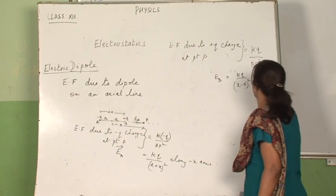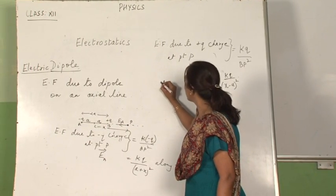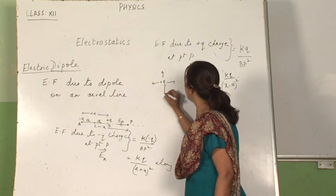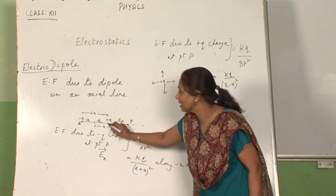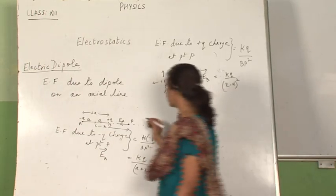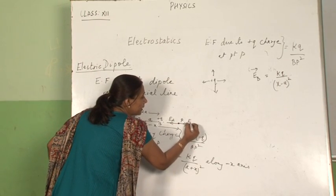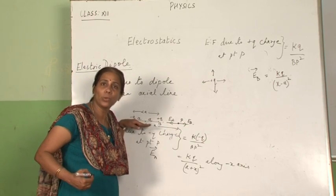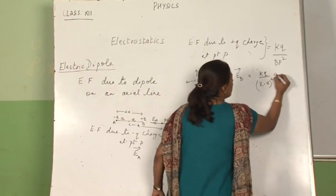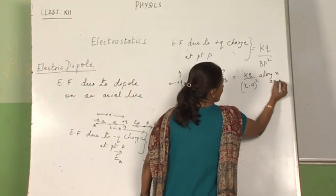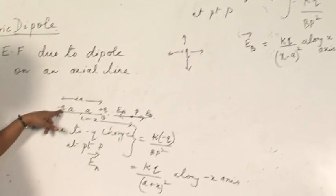Now what is the direction? Just check it out — this is E_B. I have told you that whenever you have a plus q charge, the direction will be away from the point. So at this particular point, the direction of the electric field will be in this way. I should show it from point P, so E_B is in the direction along the x-axis.